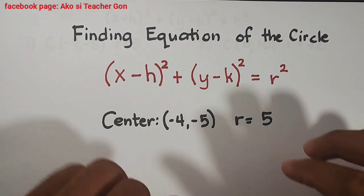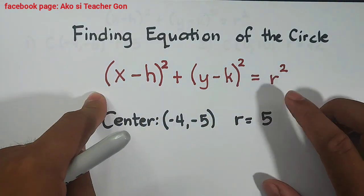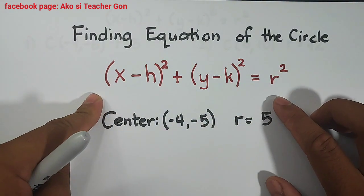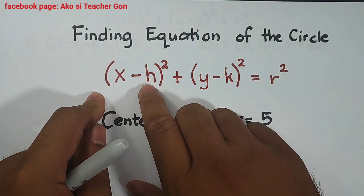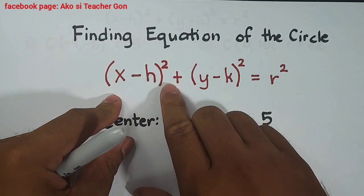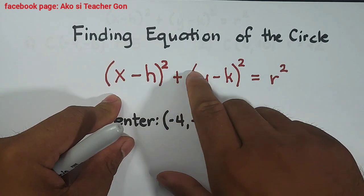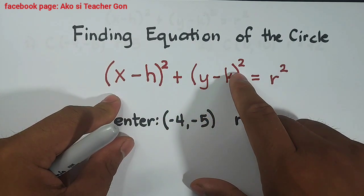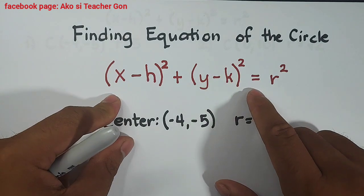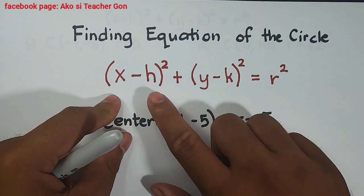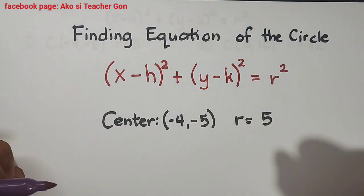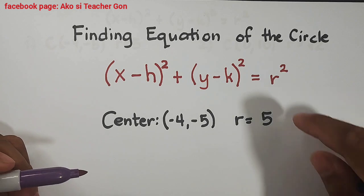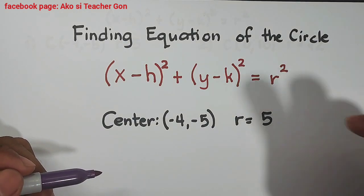We have here the standard form of the equation of a circle in the conic section, which is (x - h)² + (y - k)² = r². Here your h and k is the center of the circle while the variable r is the radius.